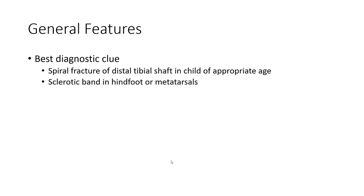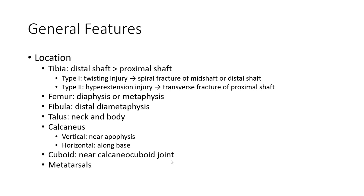Best diagnostic clue: spiral fracture of the distal tibia shaft in a child of appropriate age. A sclerotic band of the hindfoot or metatarsal zone. Location: distal tibia shaft more than proximal tibia shaft. Type 1: twisting injury leading to spiral fracture of mid-shaft or distal tibia shaft.